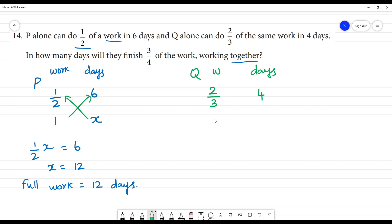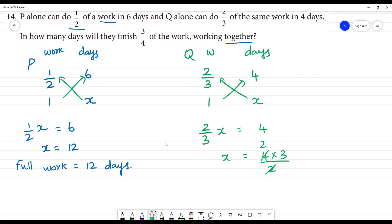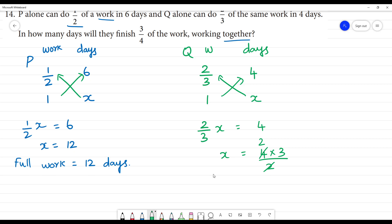So the whole work, 2 by 3, cross multiply. 2 by 3 into X is equal to 4, then X is equal to 4 into 3 by 2. 3 times 2 is 6. Full work, 6 days.